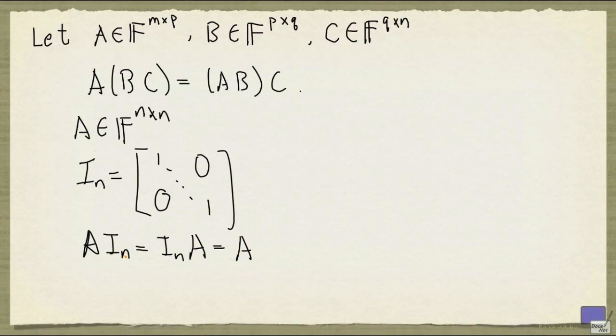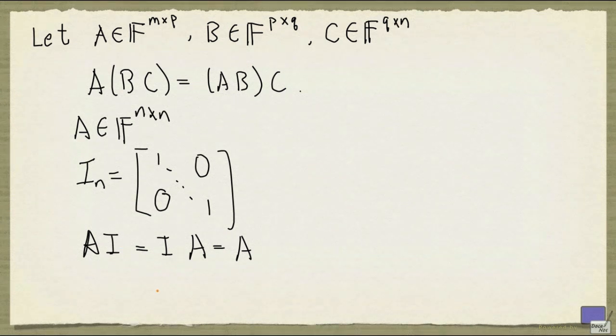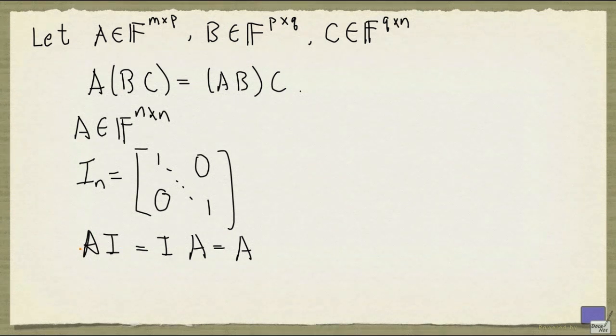Sometimes when the dimension is clear, we don't write the N, and we just write the I. So that's just a couple of properties that I want to mention before we talk more about inverses.